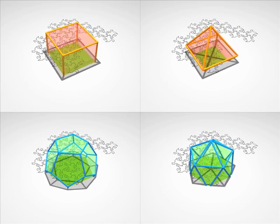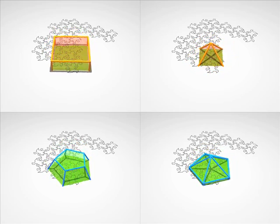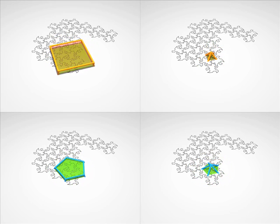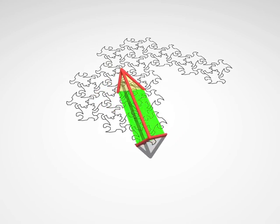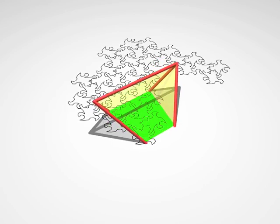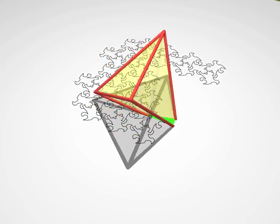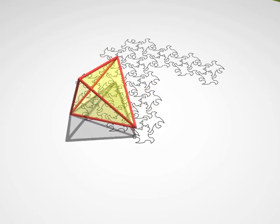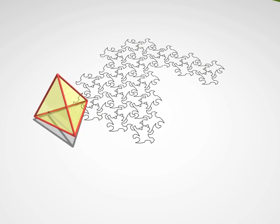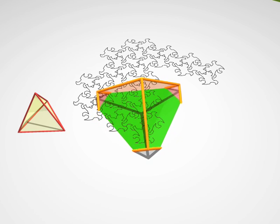To see how hard it is to visualize the form of a geometric body from its cross sections, try to guess what is crossing through the plane now. A tetrahedron. And now? It was a cube.